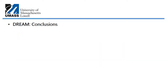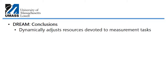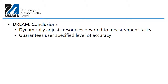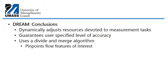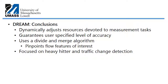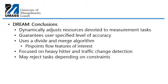I also looked at DREAM — Dynamic Resource Allocation for Software-Defined Measurement. DREAM dynamically adjusts resources devoted to particular measurement tasks, guarantees a user-specified level of accuracy, and uses an interesting divide-and-merge algorithm to pinpoint different flow features of interest. It is focused on heavy hitter and traffic change detection, and may reject tasks depending on particular constraints.